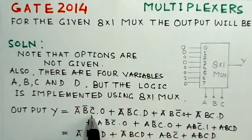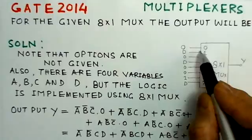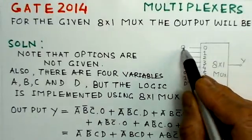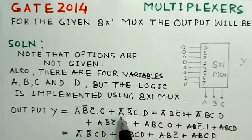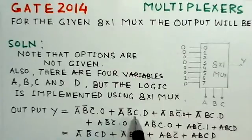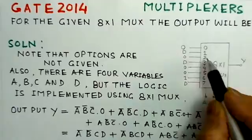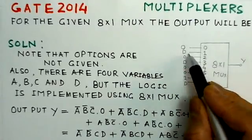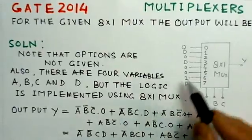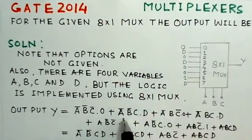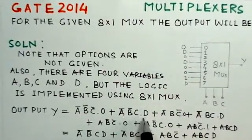Now the second one, this will be A bar B bar C dot D. This is the output; D is the output here. So the output will be—D is the input here, so this will be A bar B bar C dot D.